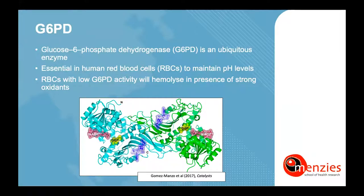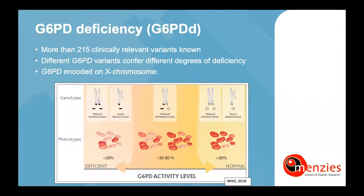The glucose-6-phosphate dehydrogenase enzyme, short G6PD, is a tetramer and consists of two identical dimer subunits, as you can see in the picture. It is a ubiquitous enzyme found across most of the living world, apart from some archaea bacteria. Amongst other functions in human red blood cells, the enzyme is essential to maintain the cell's pH level in response to changing blood plasma pH levels. More than 215 clinically relevant variants have been identified, all of which confer varying degrees of low G6PD activities.